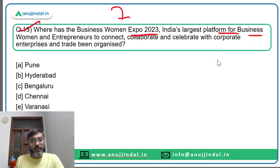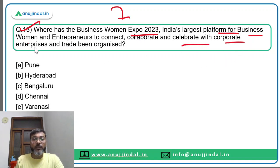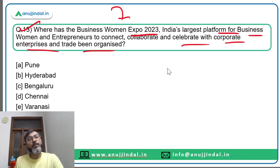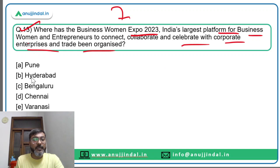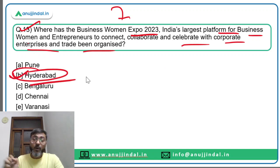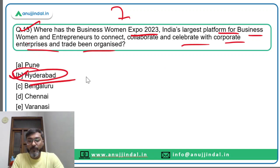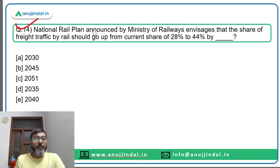Question thirteen: where has Business Women Expo 2023 — India's largest platform for business women and entrepreneurs to connect, collaborate and celebrate with corporate enterprises and trade — been organized? It has been organized in Hyderabad. Option B is the correct answer.